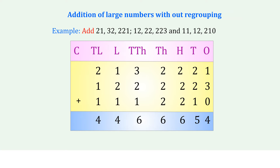Adding the columns, we get: 4, 4, 6, 6, 6, 5, 4. This gives us the sum of the three numbers arranged in the place value table.